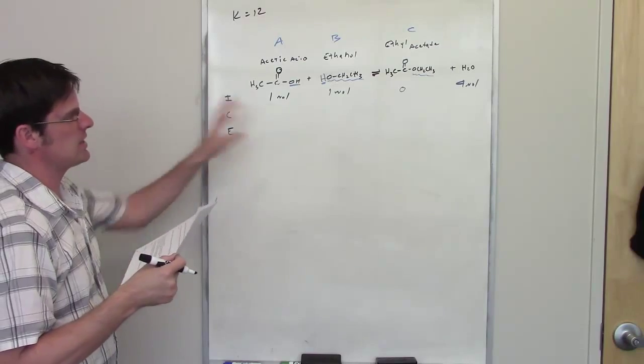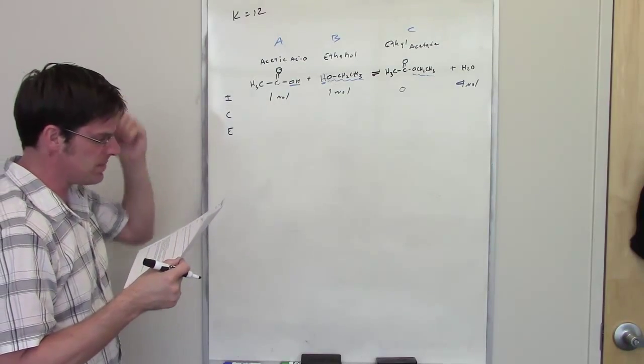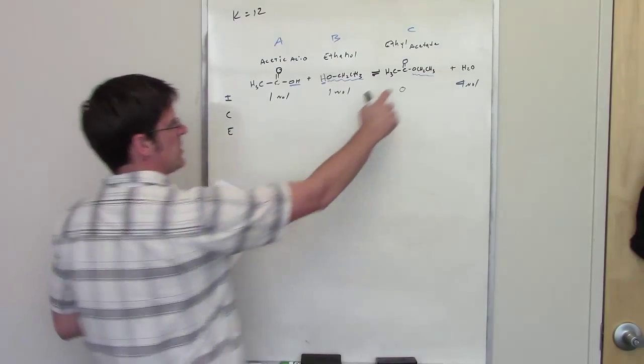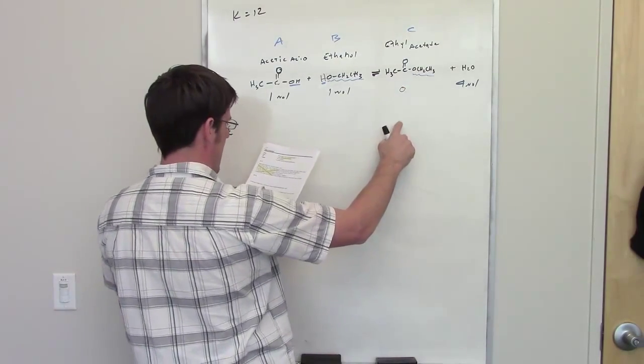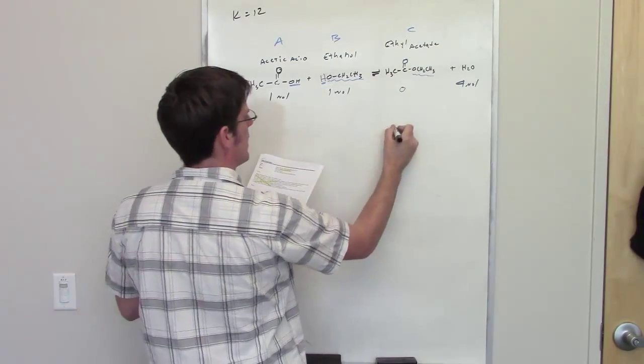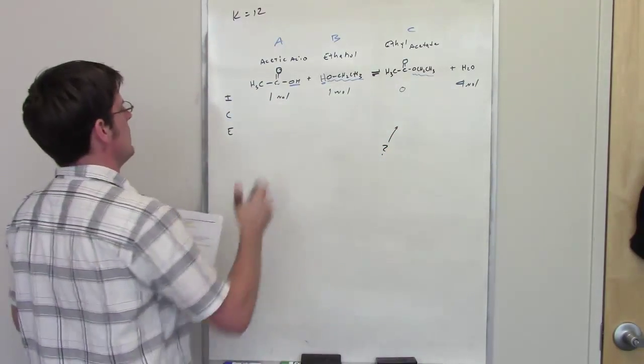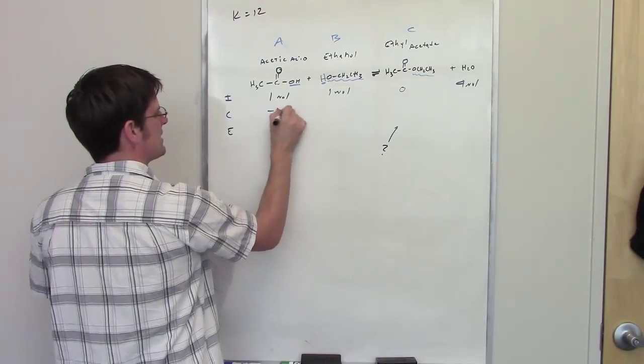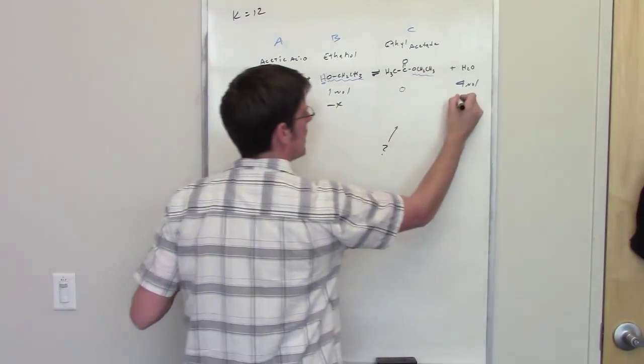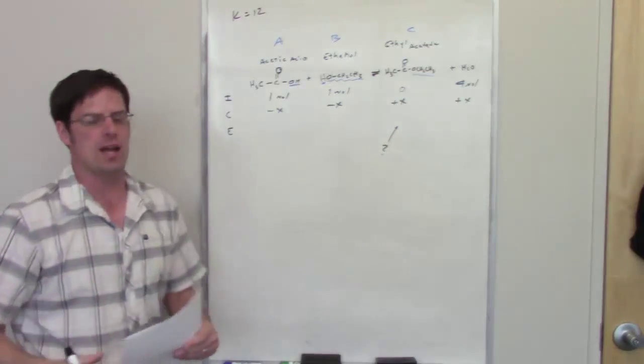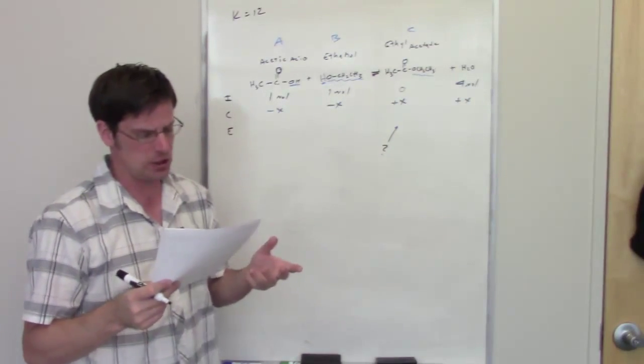So in this question, it says that I've got a mole, a mole, and I've got four moles of this, and I'm throwing that in. Presumably, we have zero moles of that. It then goes on to say that this thing is allowed to stir until it reaches equilibrium. And then it asks me to calculate the amount of ethyl acetate produced after it's reached equilibrium. So, in other words, I'm trying to figure out what is that. So let's go ahead and do this. So, once again, I'm going to get minus x here, minus x there, and plus x, and plus x over there.